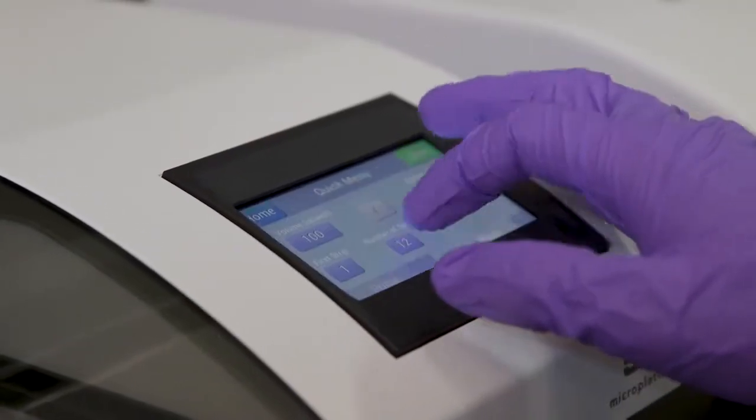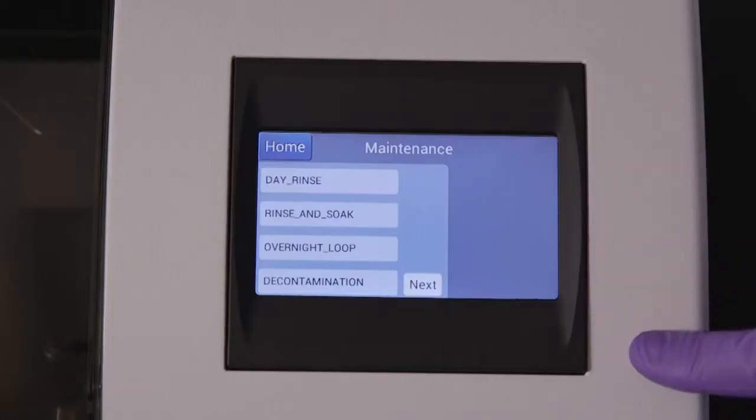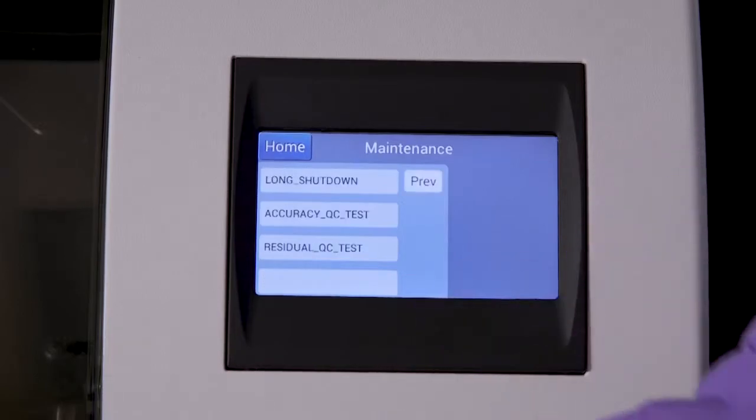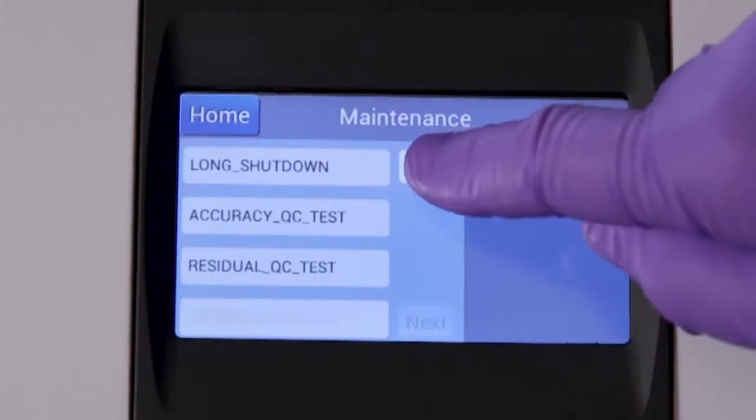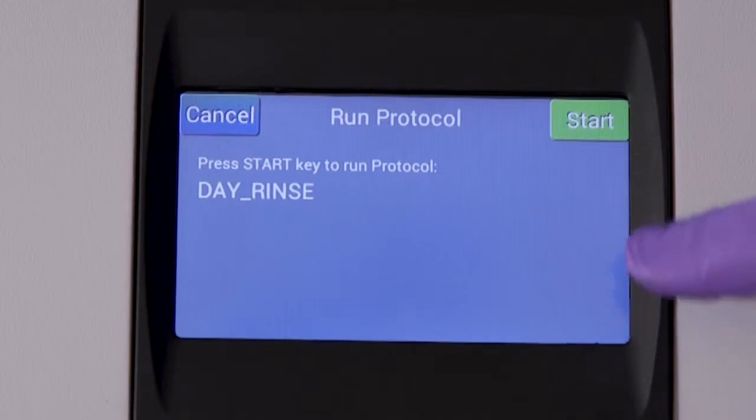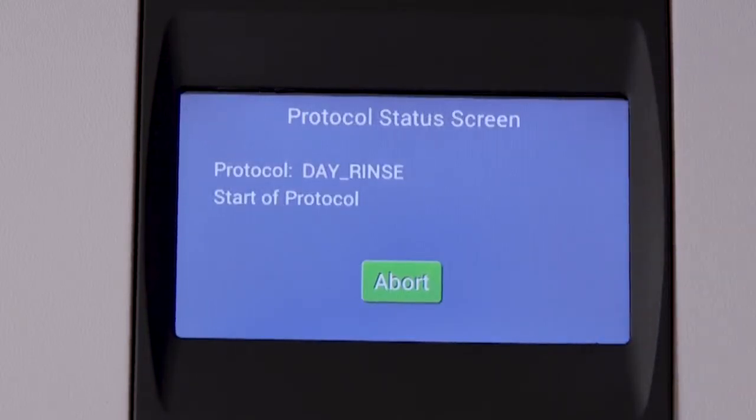Predefined automated maintenance routines, including daily and overnight protocols, keep the fluid path clean and prevent buildup of salt, protein or other material that can block manifold tubes, causing inadequate washing.